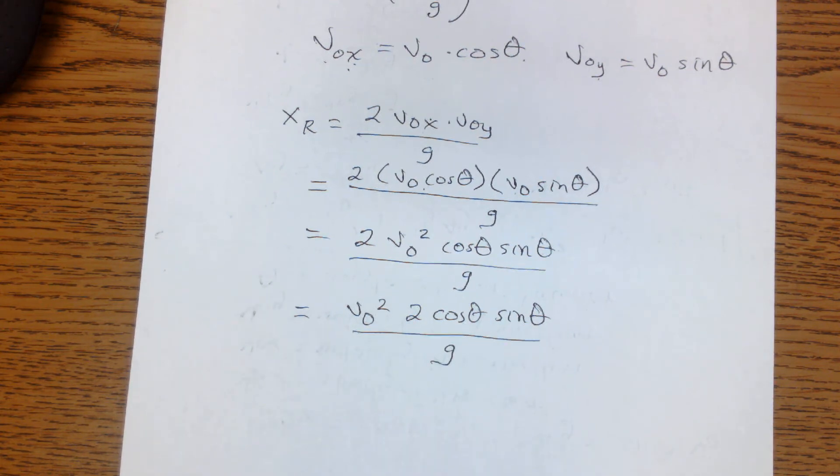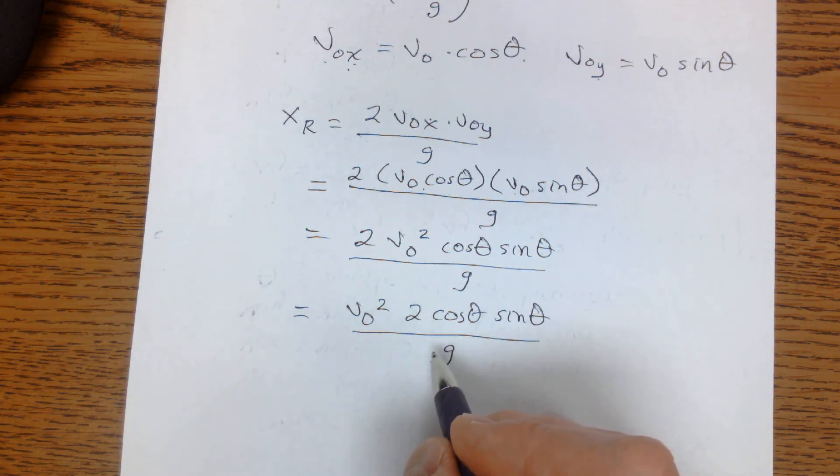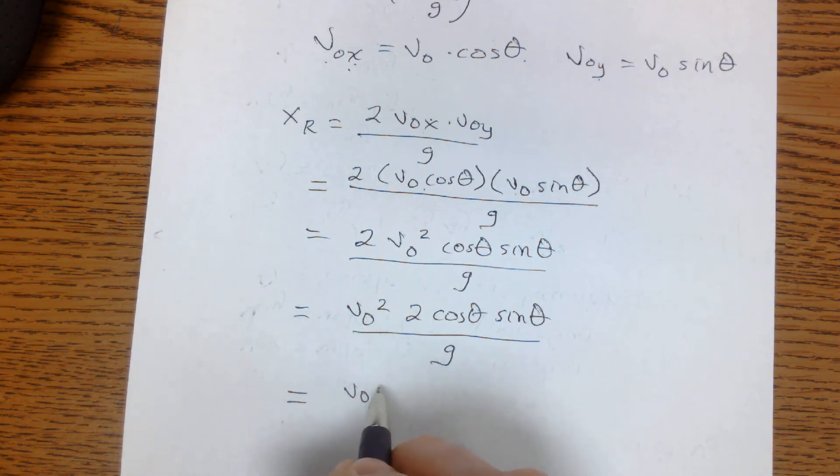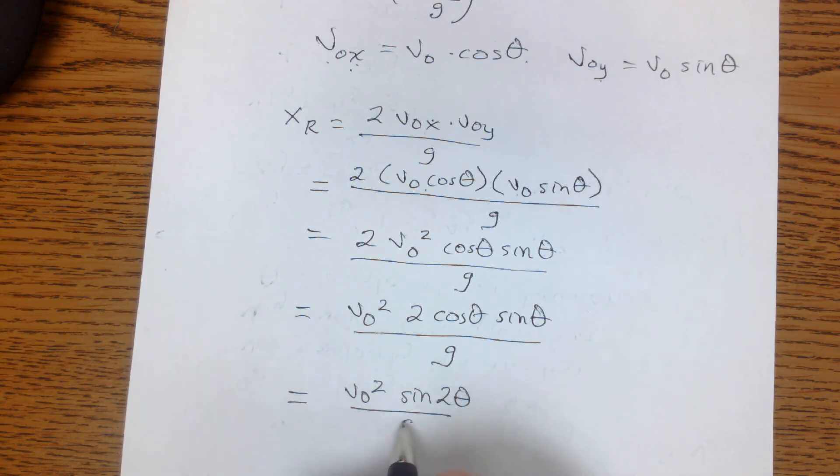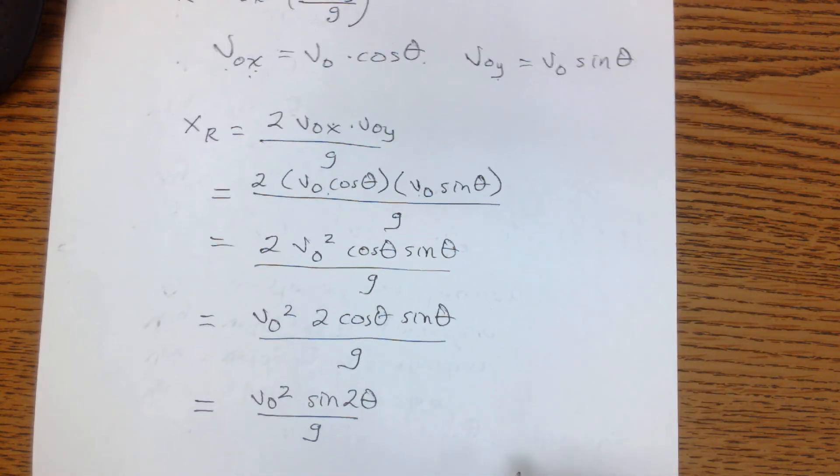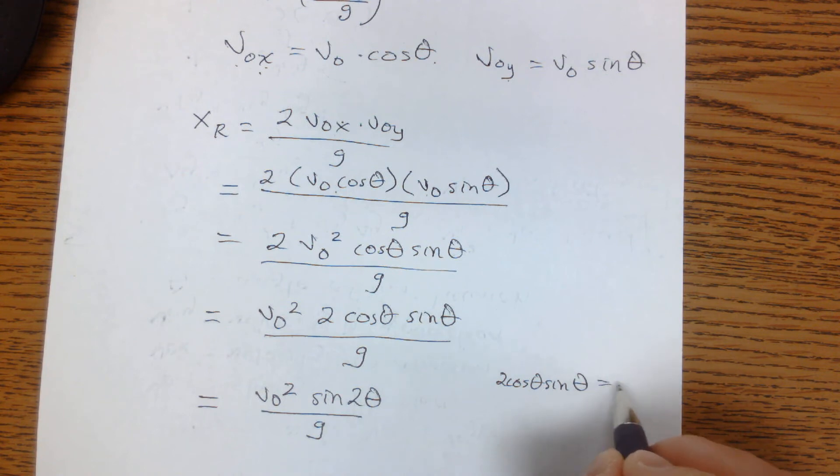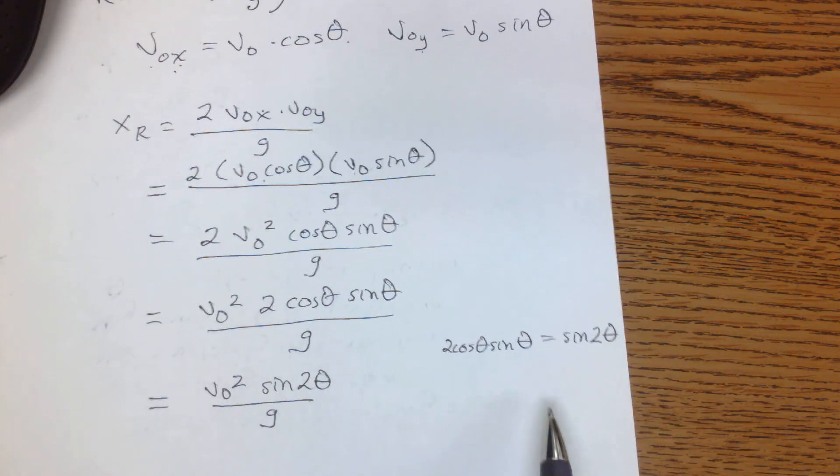And now we've got a little relationship that ends up making it look like this. And that trig identity is that 2 cosine theta sine theta equals sine of 2 theta.